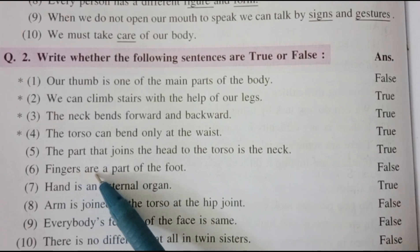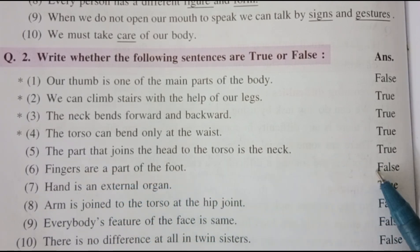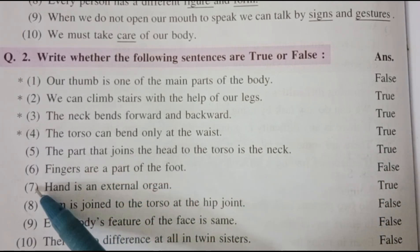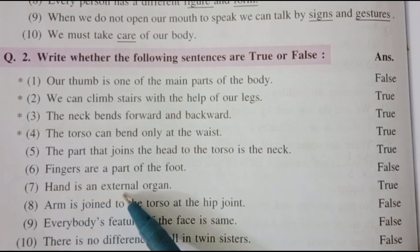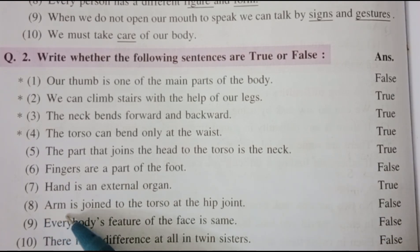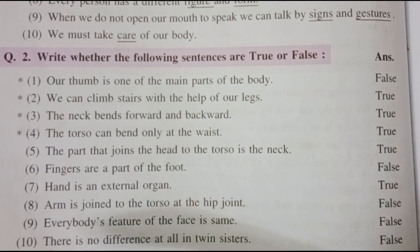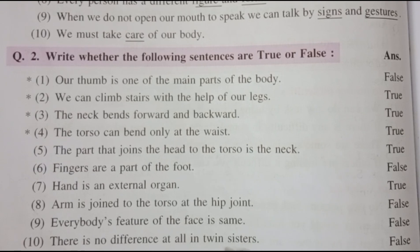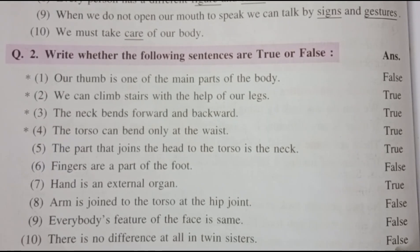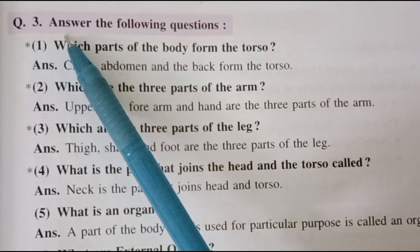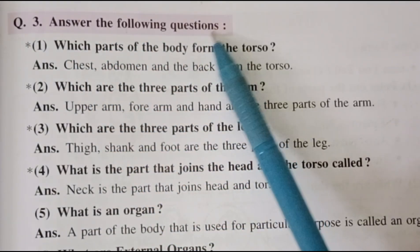6. Fingers are a part of the foot — Answer: false. 7. Hand is an external organ — Answer: true. 8. Arm is joined to the torso at the hip joint — Answer: false. 9. Everybody's features of the face are the same — Answer: false. 10. There is no difference at all in twin sisters — Answer: false.